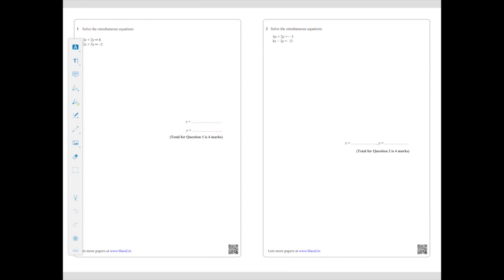Let's use question 2 because it's not being blocked by my sidebar. So 6X plus 2Y equals minus 3, 4X minus 3Y equals 11. Now it doesn't matter which coefficient I make the same.